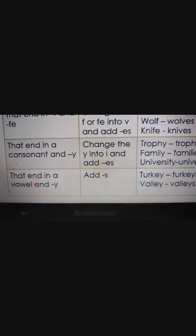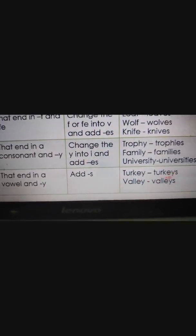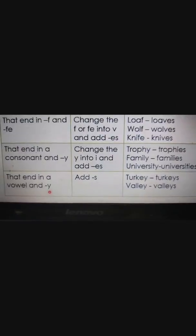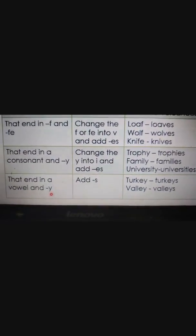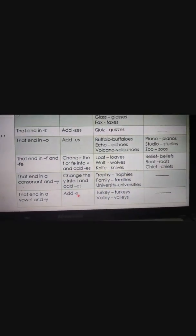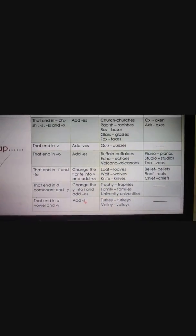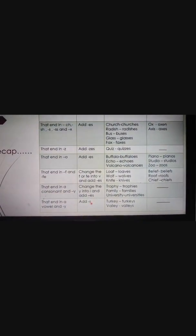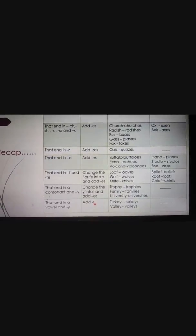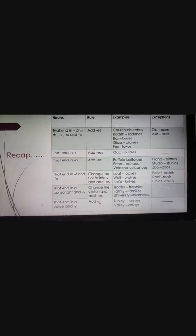Nouns ending in a vowel and Y — we just add S. Like turkey/turkeys, valley/valleys. Any vowel combined with Y — AY, EY, IY, OY, or UY — we always add S. You can see the same table I gave you yesterday with all these rules.